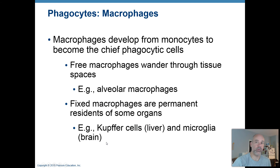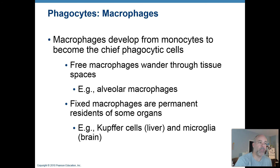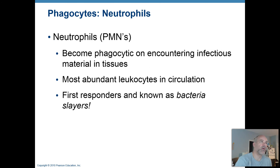Microglia in the brain — if you remember those from when you studied the nervous system — are other cells besides neurons in your brain. They are very small cells and they function like macrophages in the brain, helping clear out things that are foreign or not supposed to be in there. It's good that you permanently have macrophages stationed in your brain because the brain is a sensitive organ. When bacteria and viruses get in there, you want to be able to clear those out as soon as possible.